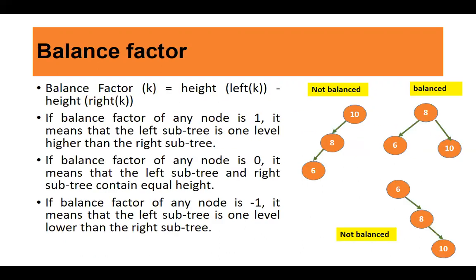The balance factor is one of the important attributes of an AVL tree. The balance factor of node k is: height of left subtree of node k minus height of right subtree of node k. If the balance factor of any node is one, it means the left subtree is one level higher than the right subtree. If the balance factor is zero, it means the left subtree and right subtree have equal height — here height means number of nodes on that path. If the balance factor of any node is minus one, it means the left subtree is one level lower than the right subtree.